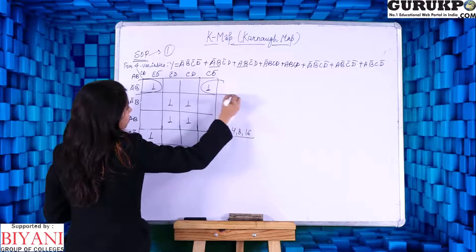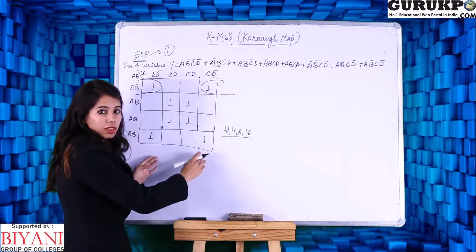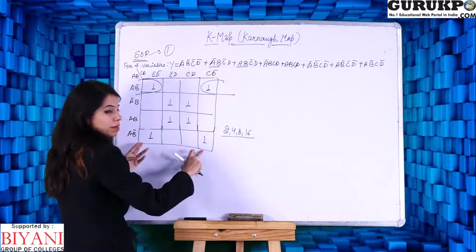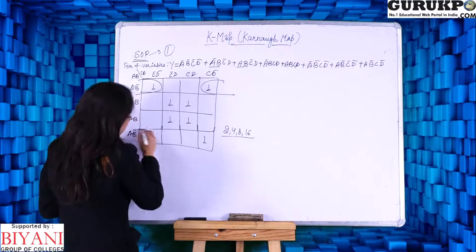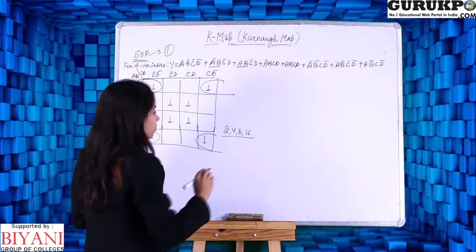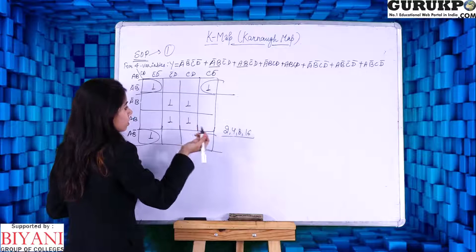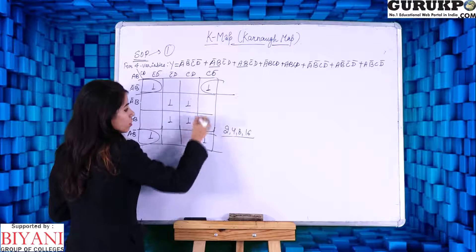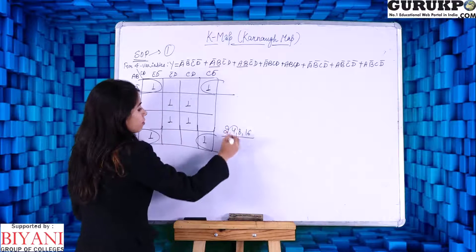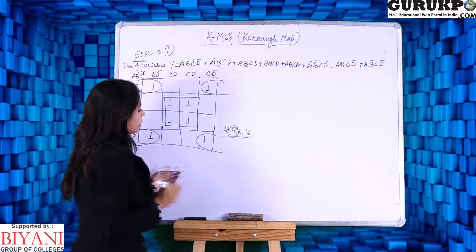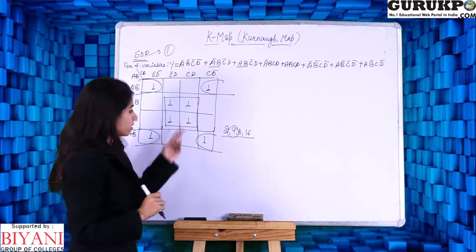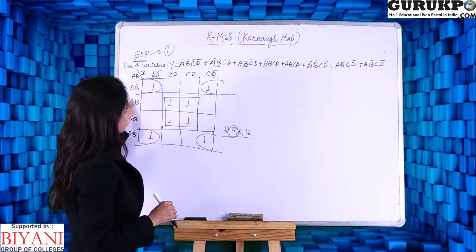We can use two pairs or four pairs to form groups. Using 4 gives us only one group, which keeps the minimum number of groups. We will have two groups: the first is the corner group and the second is the middle group.